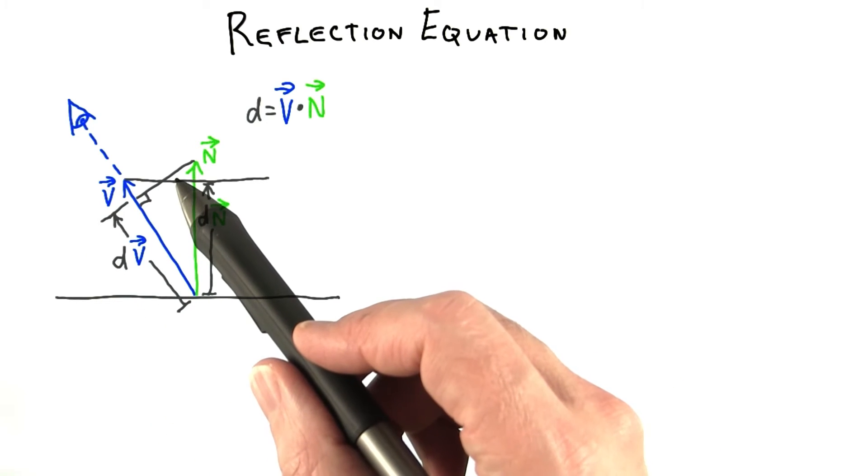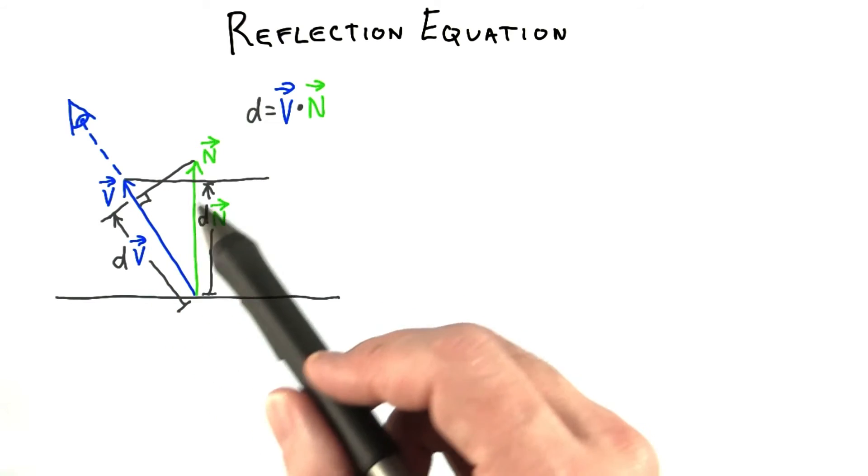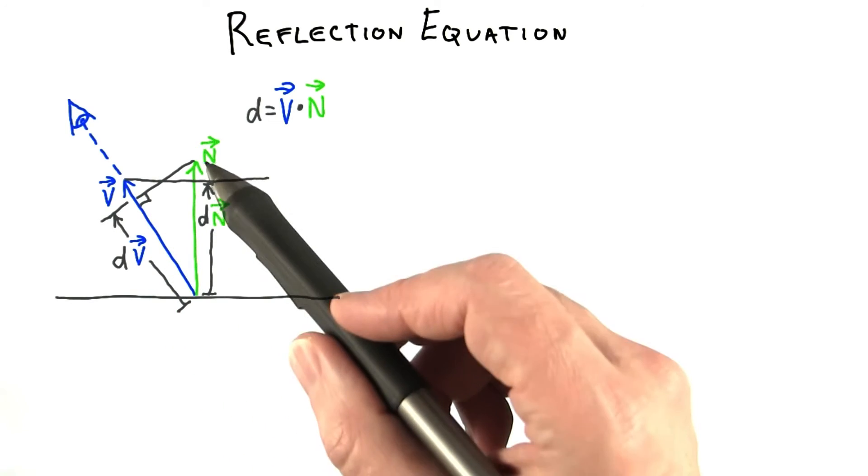For example, dv is shown as the projection of n onto the v vector, and dn is shown as the projection of v onto the n vector.